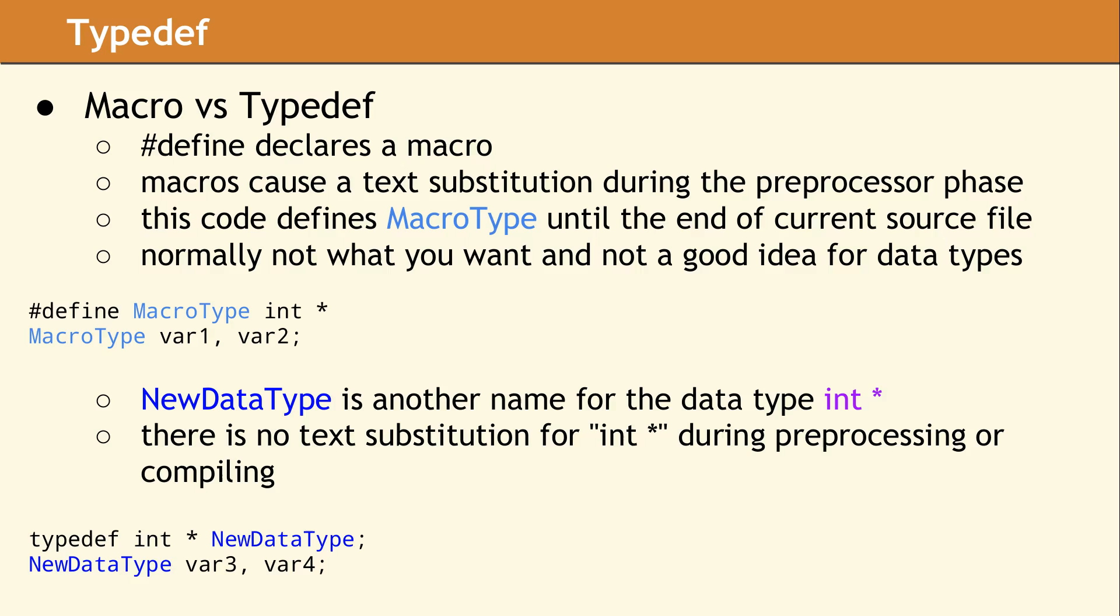In the type alias for var3 and var4, both of them will have a data type of int star, which is probably what you wanted.